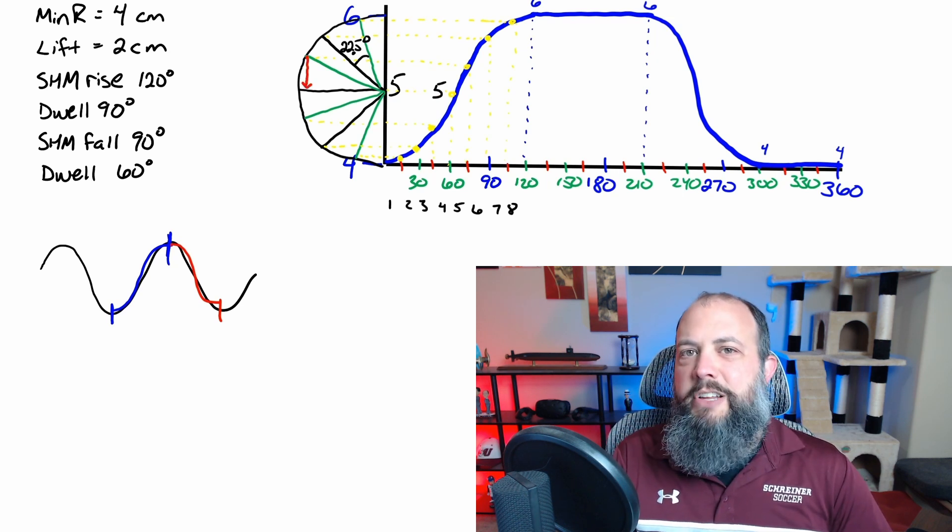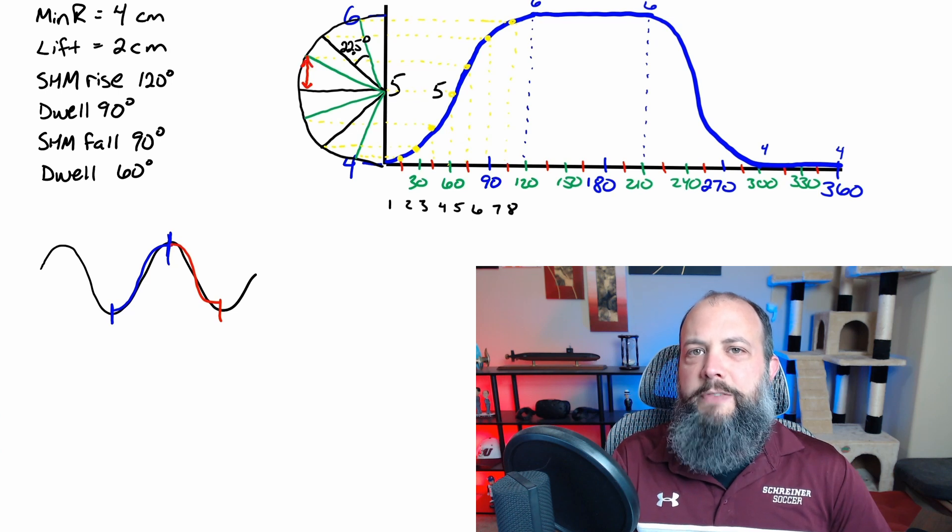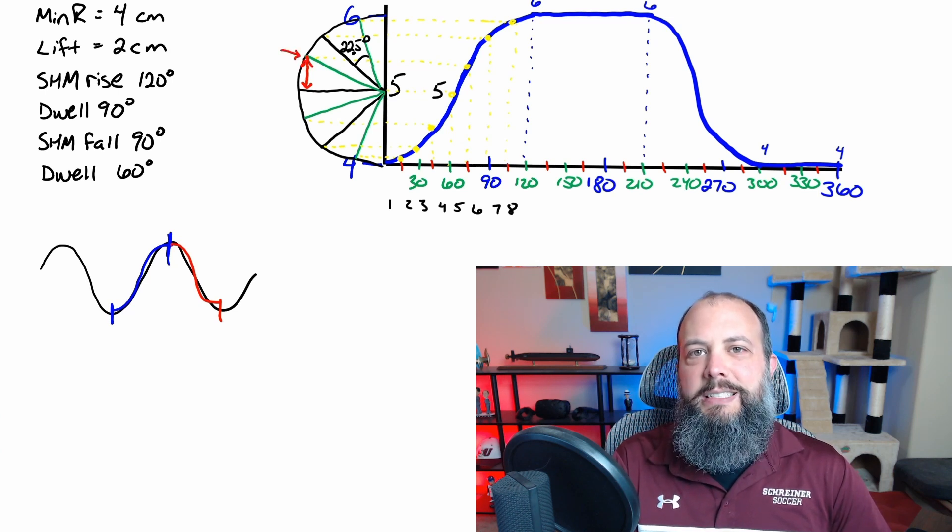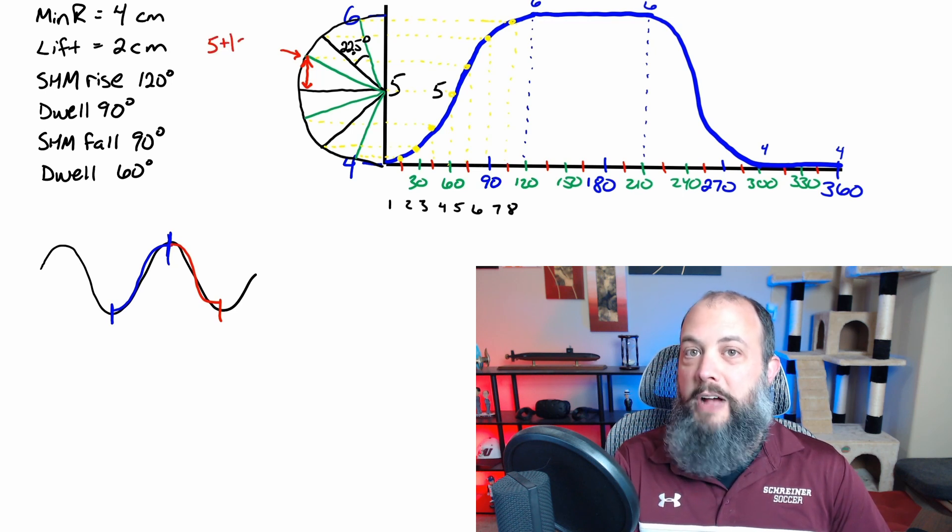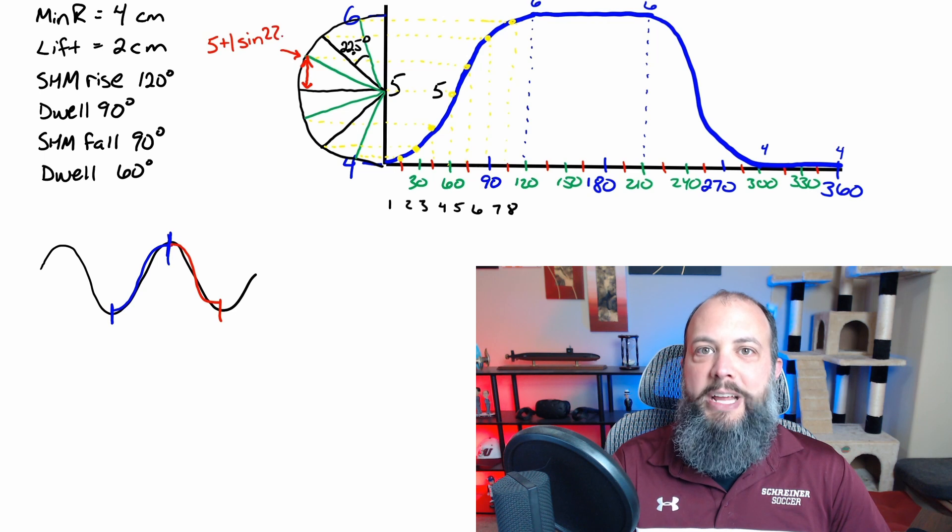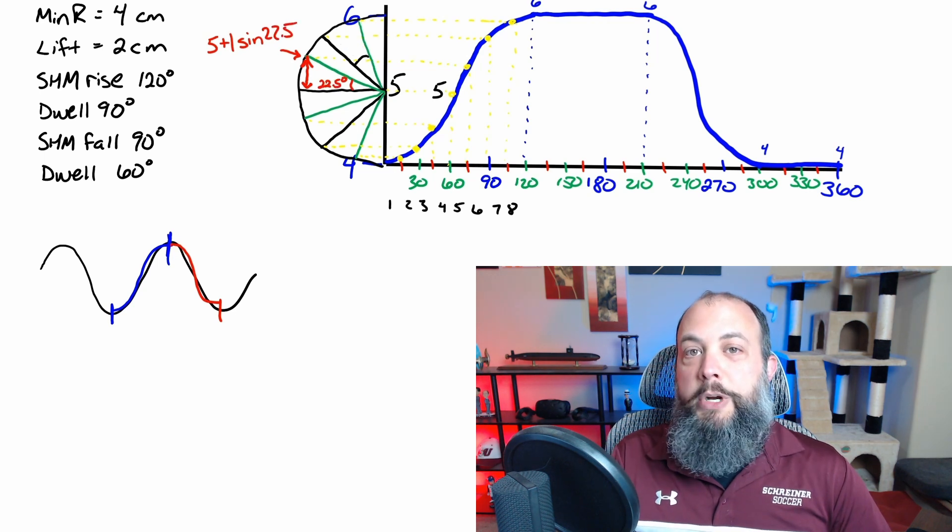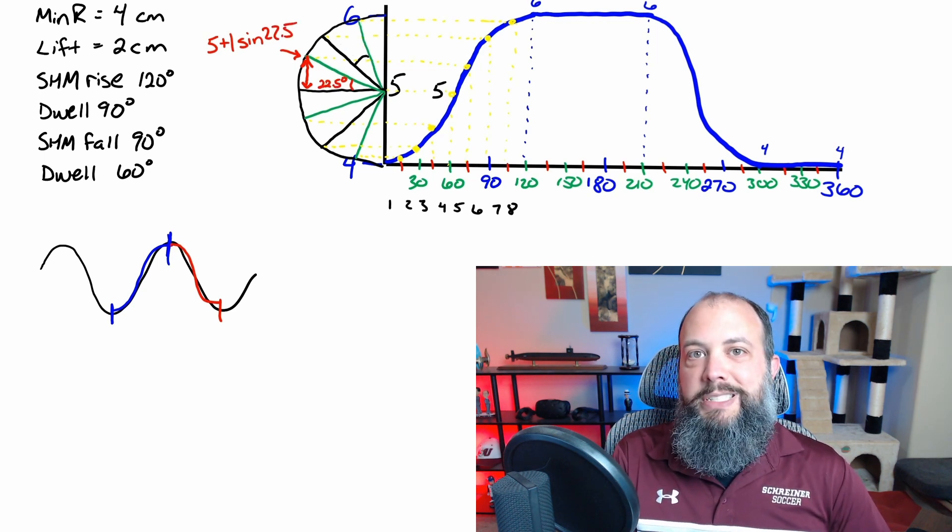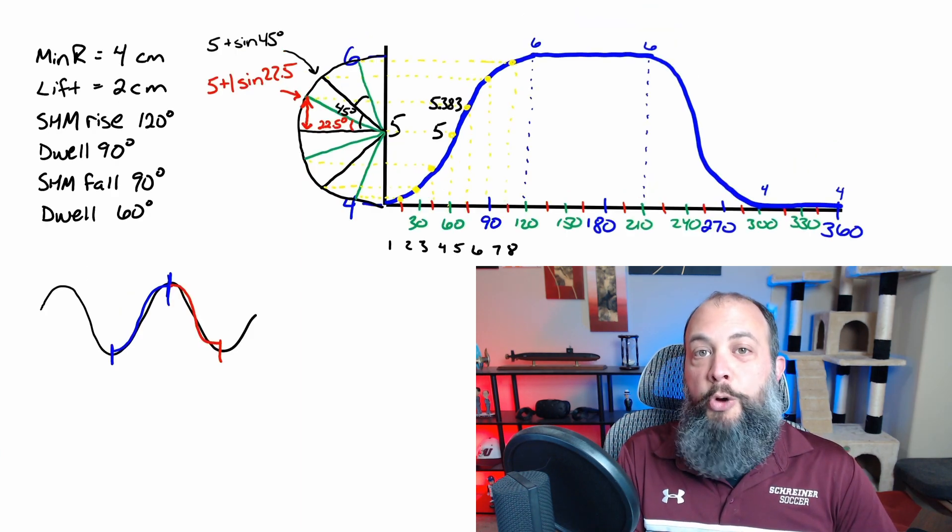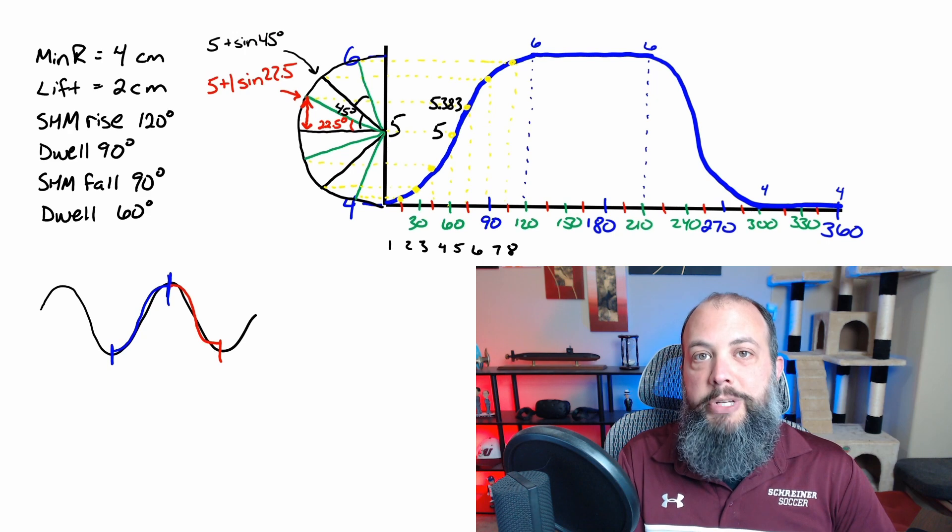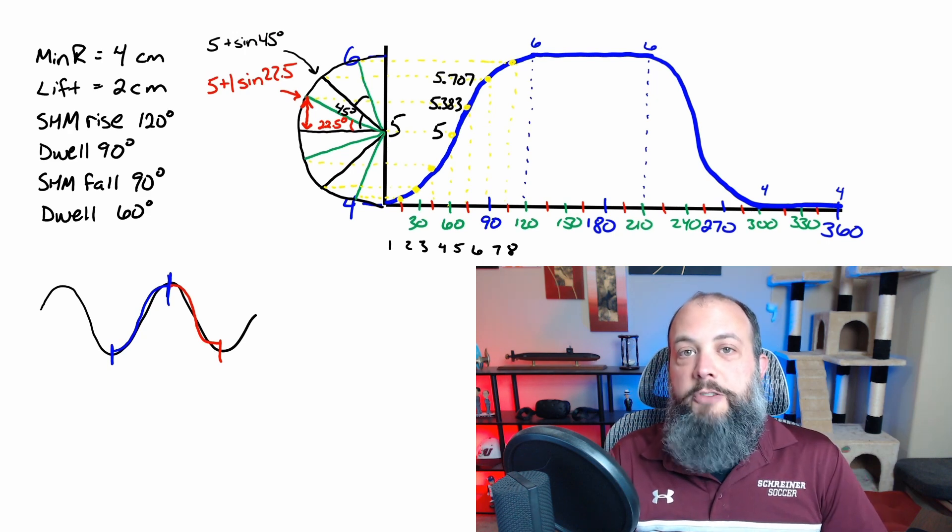But to find out where the 75 degree increment is, I'm going to need to find the length of this red height. And that height is going to be one, which is the radius of this circle because it goes from five in the middle to six on the top. So it's radius of one times sine of 22.5 degrees because each of those pie pieces is 22.5 degrees, giving a value of 5.38. The next point up, 22.5 times two is 45 degrees and it's going to be at 5.707.